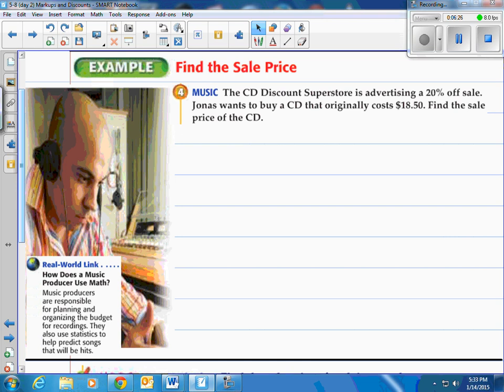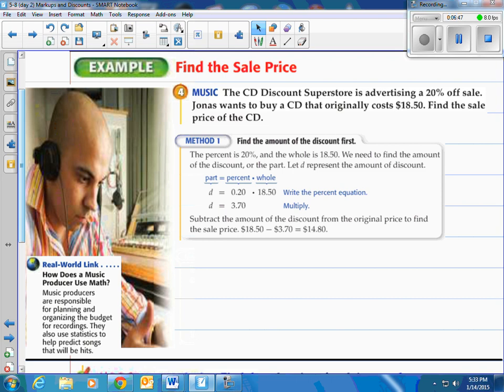It says find the sale price on music. The CD discount Superstore is advertising a 20% off sale. Jonas wants to buy a CD that originally cost $18.50. Find the sale price of the CD. So on the price tag it says $18.50 but we get to take off 20% of that particular price because it's a 20% off sale. So what do we do? Well method one says find the amount of the discount first and then subtract it from the $18.50. The percent is 20% and the whole is $18.50. We need to find the amount of the discount or the part. Let D represent the amount of the discount. So they take D and they say that's equal to 20% times $18.50. When they multiply the 0.2 times $18.50 you get $3.70. Then we subtract the amount of the discount from the original price to find the sale price. So they took the $18.50, took off the $3.70. Your price after the 20% discount is $14.80.